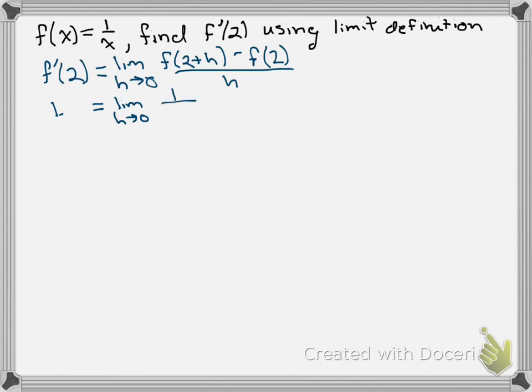So f of 2 plus h becomes 1 over 2 plus h. f of 2 is 1 over 2, all over h. And there's our first step.